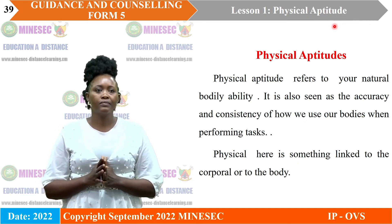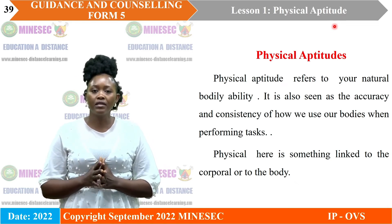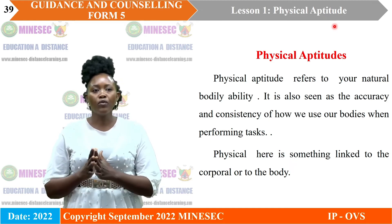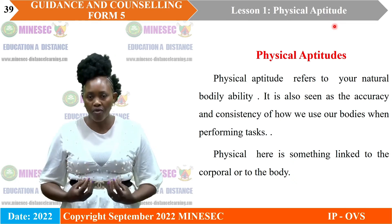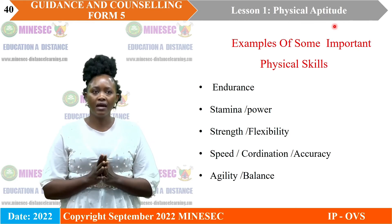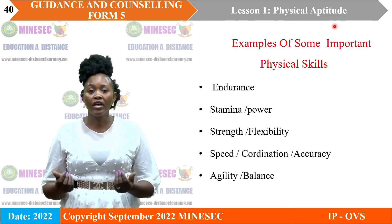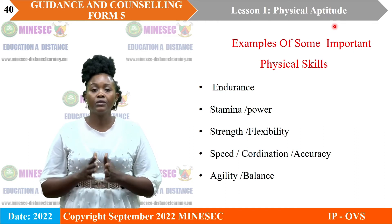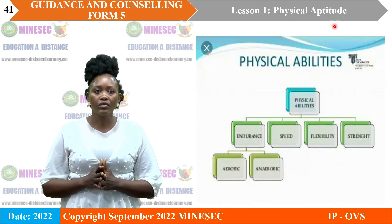What then is physical aptitude? Physical aptitude comes from a Greek word meaning the ability to do it. Aptitude generally refers to your natural bodily ability — when we bring 'physical' to it, we incorporate that bodily part: the ability to do something with your corporal body. Examples of physical skills that students need in order to excel in their academics include endurance, stamina, strength, power, flexibility, speed, coordination, accuracy, and balance. You need all of these to succeed in your academics.